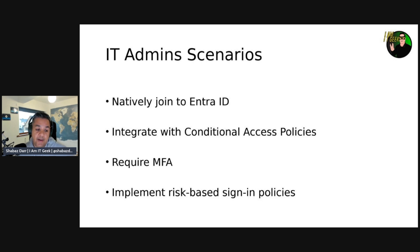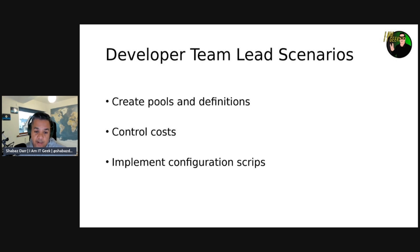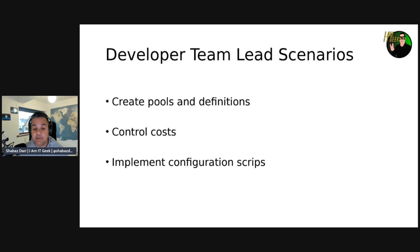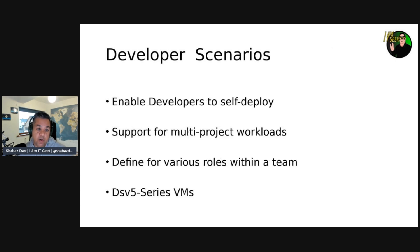Now let's talk about the developer team lead scenario. After developer team leaders are assigned the Dev Center project admin role, they can help manage projects. Project admins can create dev box pools and add appropriate dev box definitions, and control costs using the auto-stop schedule. They can use configuration scripts that invoke setup tasks from a catalog attached to the Dev Center, and set up tasks during the creation of the dev box to install customized software specific to that particular project.